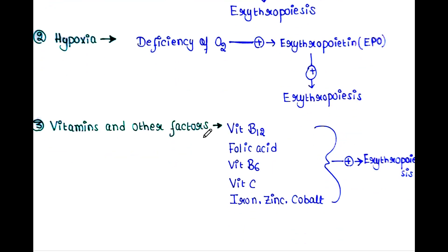Vitamins and other factors also play a role. Vitamins like vitamin B12, folic acid, vitamin B6, vitamin C, and minerals like iron, zinc, and cobalt stimulate the erythropoiesis process. So this is all about today's lecture. I hope you liked the lecture. Thank you for watching my video.